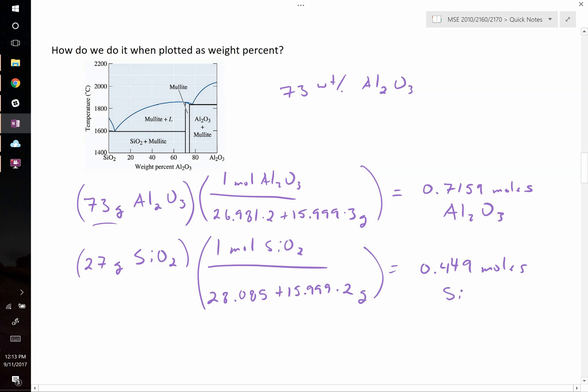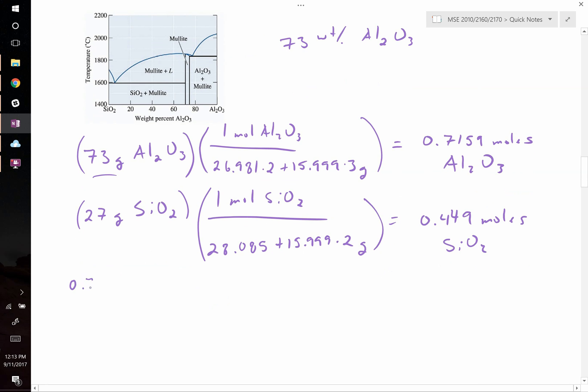Now we're ready to divide these two by one another to figure out our chemical formula. When we take 0.7159 and divide it by 0.449, we get approximately 1.5. In other words, for every one mole of SiO2 we have one and a half moles of Al2O3. Since we normally write chemical formulas without halves, we multiply both by two.